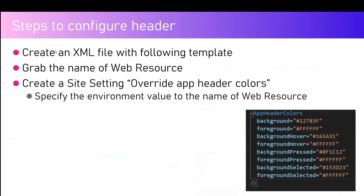So if you want to change the header component for Model Driven App, you need to do something different. You need to create an XML file. This XML file will contain a component called AppHeaderColor. It will have a background color, foreground color, background hover, foreground hover, background pressed, foreground pressed, background selected, and foreground selected. If you put these colors and create a site setting with an override app header color, that will change the header component for all Model Driven Apps with the new look within your specific environment.